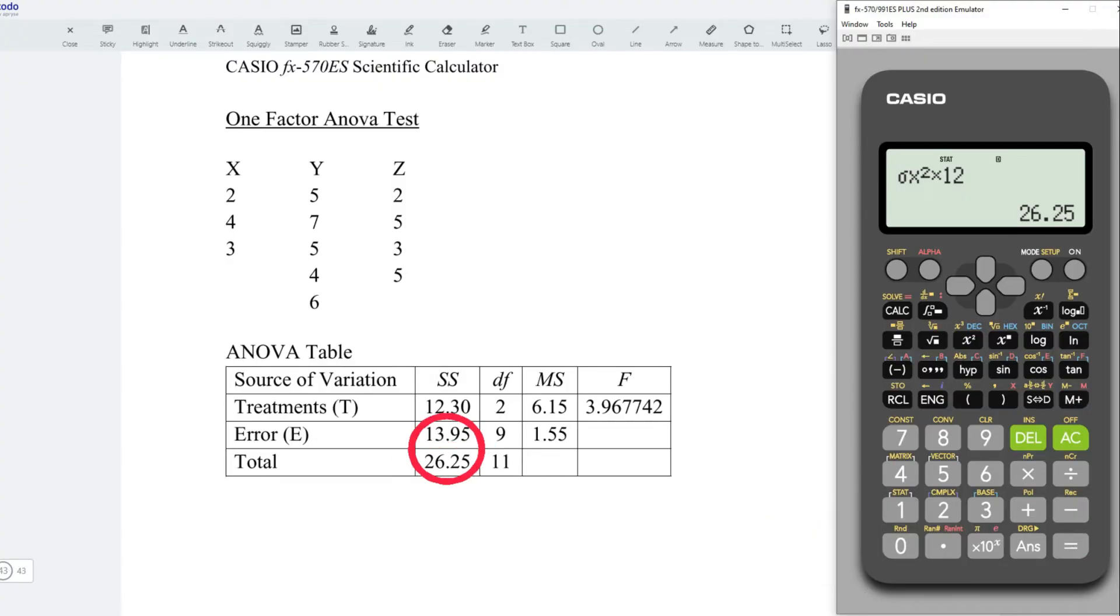Once we obtain these two values, the rest of the values can be determined easily. For example, to obtain the sum of square treatment, take total, that is 26.25 minus error, that is 13.95. Press on equal, obtain the correct value.